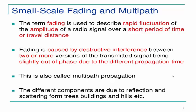The term fading is used to describe rapid fluctuations of the amplitude of a radio signal over a short period of time or travel distance. In a short duration of time or minimum distance, you will find rapid variations in the amplitude of the radio wave. This fading is caused by destructive interference between two or more versions of the transmitted signal being slightly out of phase due to different propagation times.